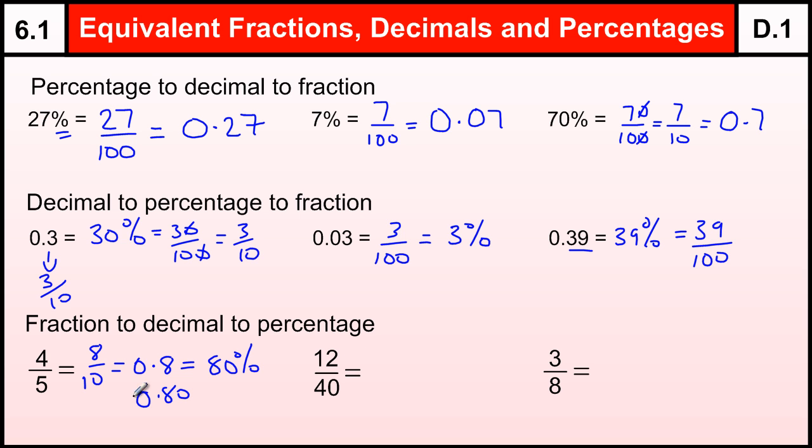Another way is to try and make it out of 100. We could have gone by times them by 20, to get 80 over 100. And then we could have gone to 80% or 0.8 from there.